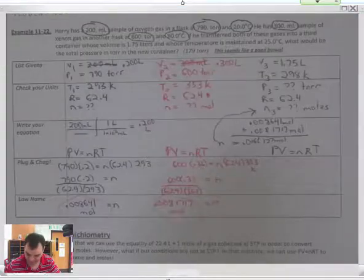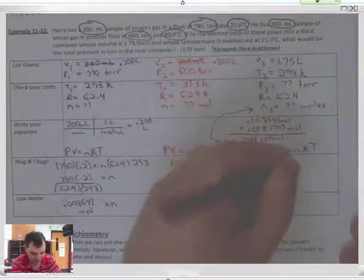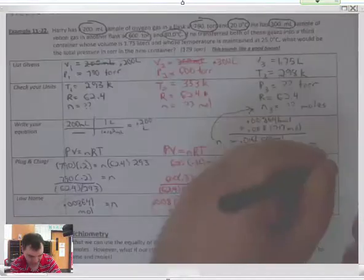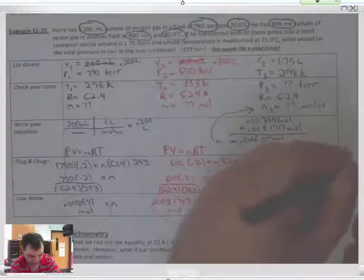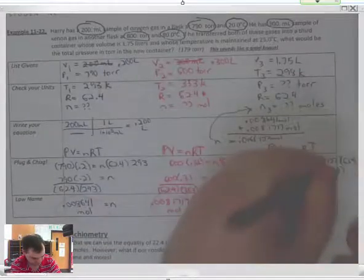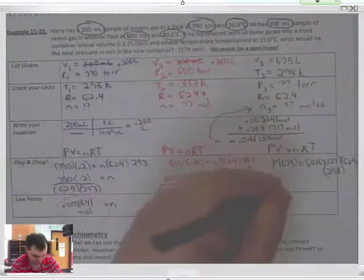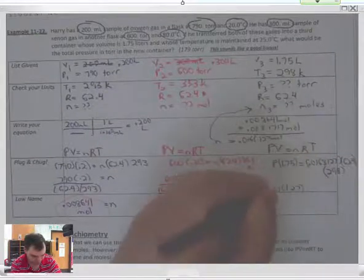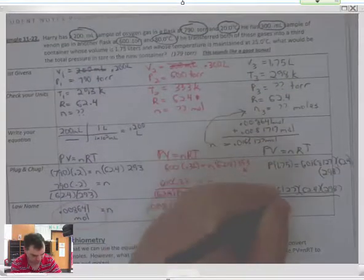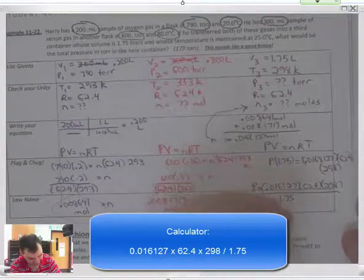And then you are going to see me do this again here. So, now it's PV equals NRT. This is P times 1.75 equals 0.0168127 times 62.4 times 298. So, P equals 0.0168127 times 62.4 times 298 divided by 1.75. P is equal to 179 torr when you finally get this done.